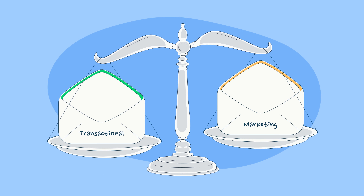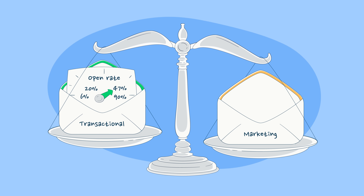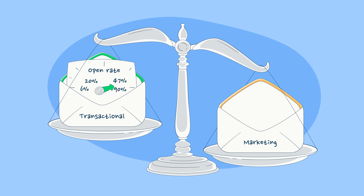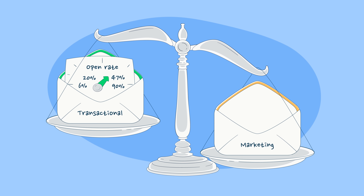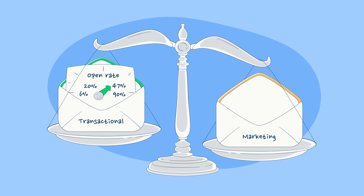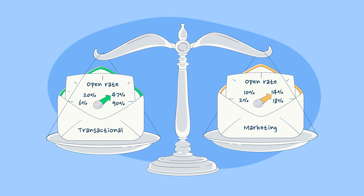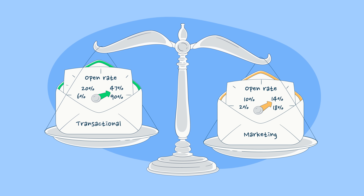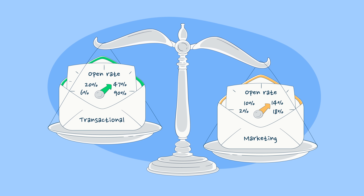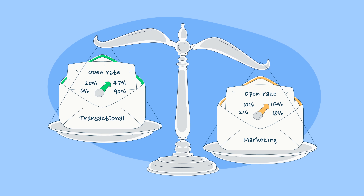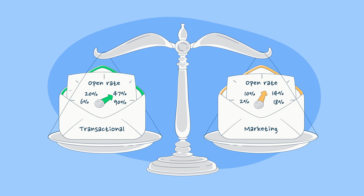Context is king. A transactional email, like a receipt, might boast an open rate of 90%. But a marketing email? That might be doing well at 18%. Knowing industry averages and email types helps set realistic expectations.